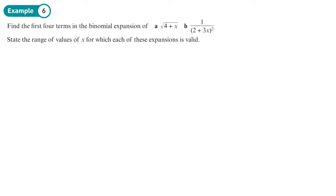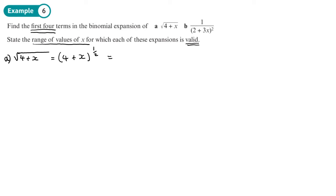The example asks us to find the first four terms — so we stop at the x cubed term — and state the range of values of x for which it's valid. Part A is the square root of (4 + x). The first thing is to write it with a power, so that's (4 + x)^(1/2). Then we factorize inside the brackets: taking the 4 out gives (1 + x/4)^(1/2), with the 4 outside. So that equals 4^(1/2) times (1 + (1/4)x)^(1/2).